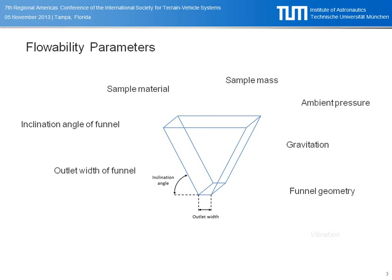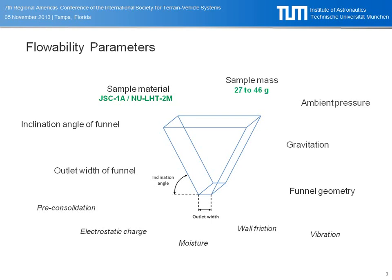Of course there are several other parameters that influence the flow of sample material through this system. I want to focus on the following ones. First of all, sample material: we investigated JC1A, which is a lunar mare simulant, and another simulant that simulates the lunar highland regions. Our sample mass was ranging between 27 to 46 grams, which is a rather small mass, not comparable to, let's say, ICIU applications, but specifically for scientific analysis instruments.